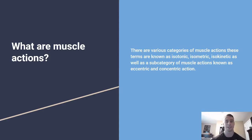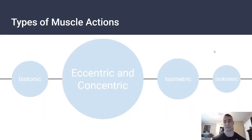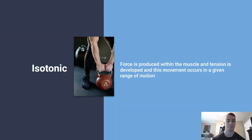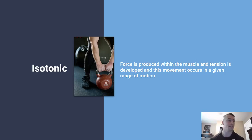Eccentric and concentric connect together with isometric and isokinetic — these terms all connect in one form. The subset category is really what defines these terms altogether. So starting with isotonic: isotonic refers to forces produced within the muscle where tension is developed and movement occurs in a given range of motion. Isotonic muscle actions are known as either eccentric or concentric.